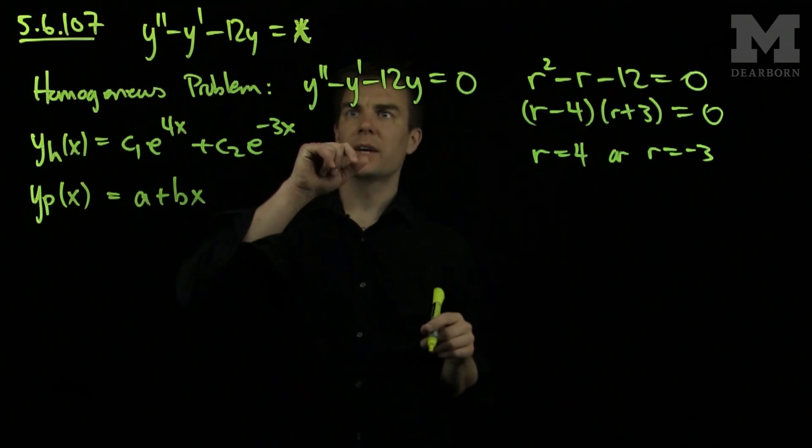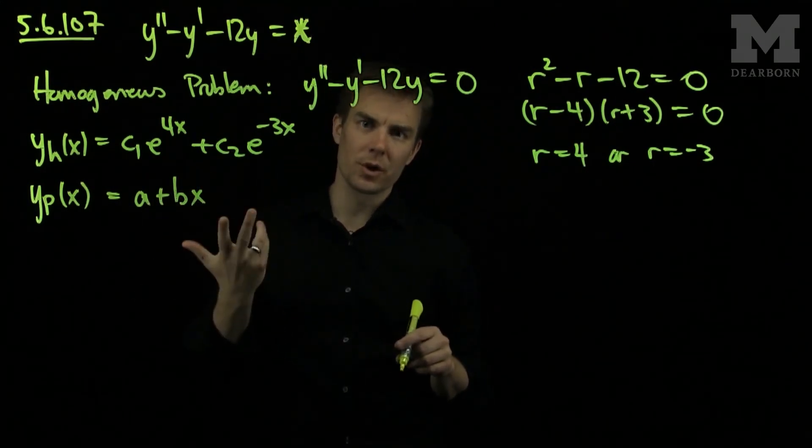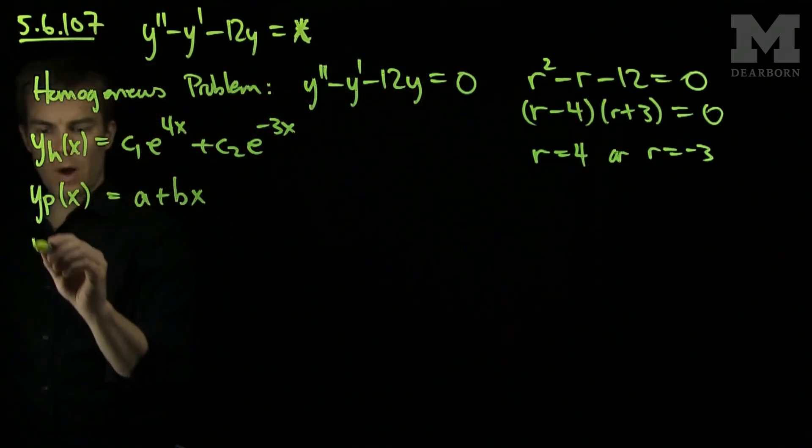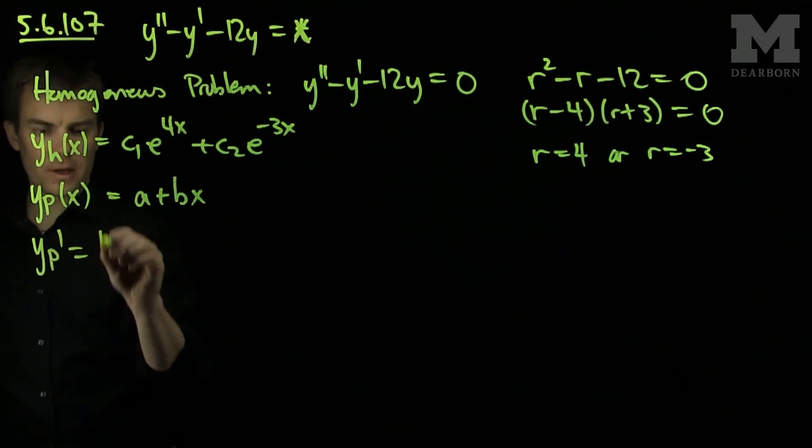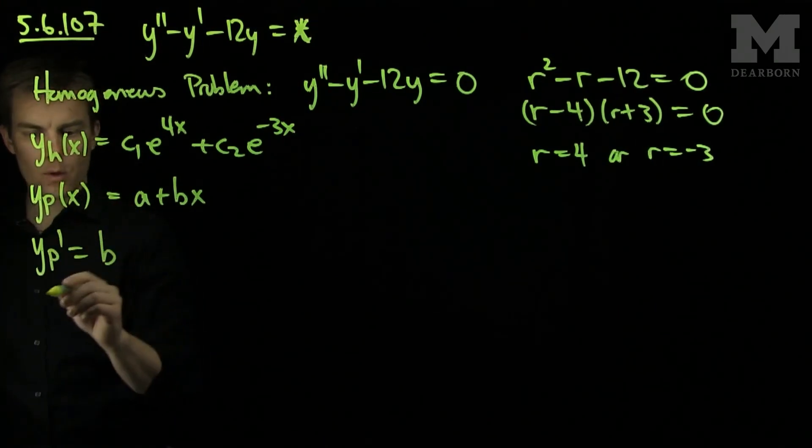Since the right hand side is a polynomial, we look for a particular solution that is also a polynomial. So y particular prime will be b, y particular double prime will be equal to zero.